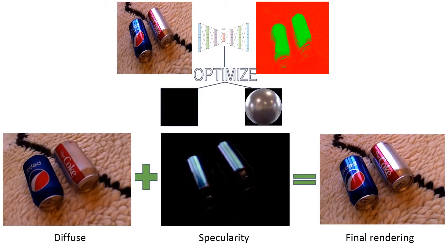The specular highlight prediction is added to the already known diffuse component, which then provides the final prediction of the appearance. We optimize for the pixels of the environment maps and the weights of the material segmentation network, such that the final rendering best reproduces the ground truth input images.